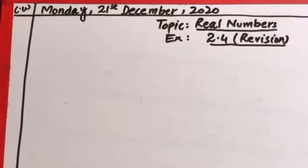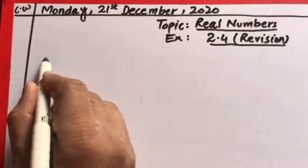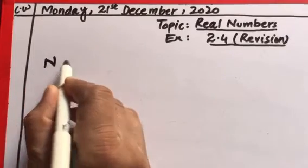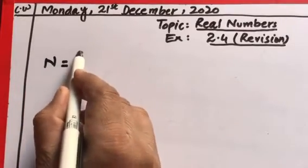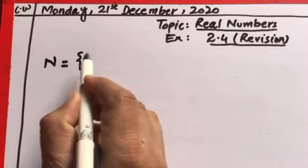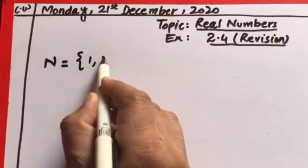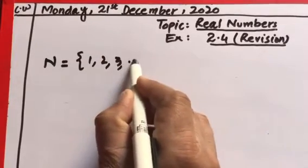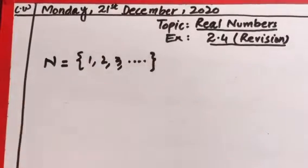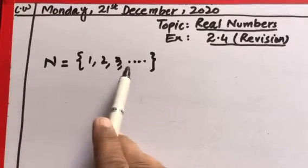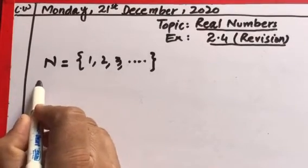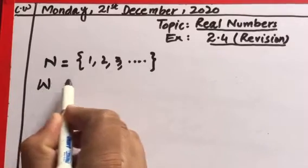In the previous lecture we revised the real numbers, and before that we revised the natural numbers. Natural numbers are represented by N, and all the counting numbers — 1, 2, 3, and so on — are called the natural numbers.